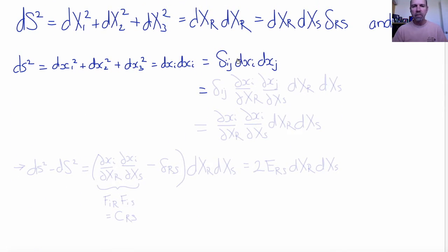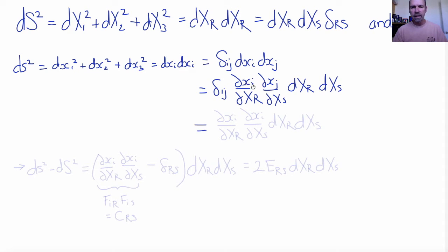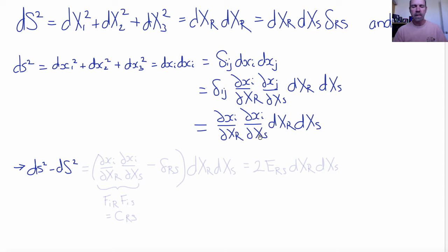Now, in order to collect terms, let's convert the elements dxi dxj using the chain rule of calculus into dXr dXs. So this expression becomes δij (∂xi/∂Xr)(∂xj/∂Xs) dXr dXs. Then, using the Kronecker delta to convert the j index to i, we get (∂xi/∂Xr)(∂xi/∂Xs) times dXr dXs.